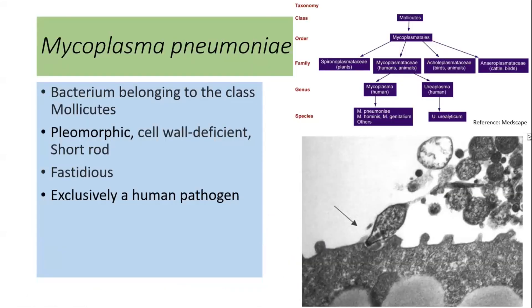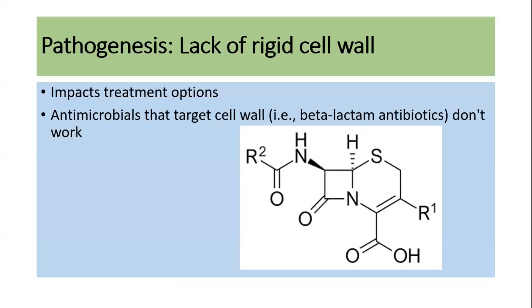Mycoplasma pneumoniae is a bacterium belonging to the class Mollicutes. It is a pleomorphic, cell wall-deficient bacterium that appears as a short rod. It is a fastidious organism and is exclusively a human pathogen.